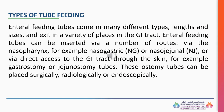Enteral feeding tubes come in many different types, lengths, and sizes, and exit in a variety of places in the GI tract. They can be inserted via a number of routes: via the nasopharynx, for example nasogastric or nasoduodenal, or via direct access to the GI tract through the skin, for example gastrostomy or jejunostomy tubes. These ostomy tubes can be placed surgically, radiologically, or endoscopically.